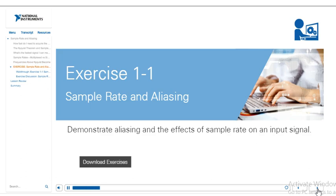In this exercise, we'll see a demonstration of aliasing and how changing the sample rate can affect an input signal. We'll be using our analog input module, which is the 9215, and our analog output module, which is the 9263.